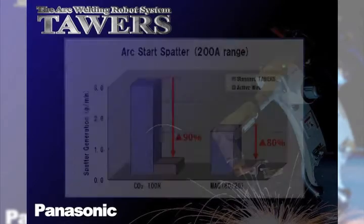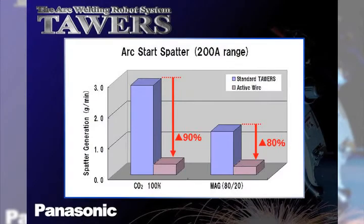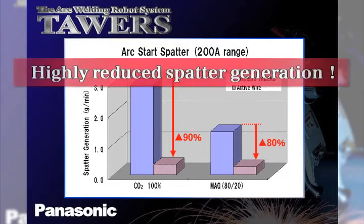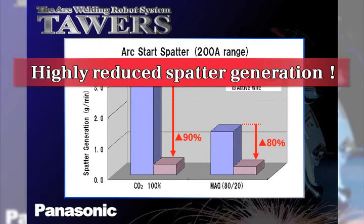Using the active start function of the active wire feed process, arc start spatter of the older generation can be reduced by as much as 90% in many applications.